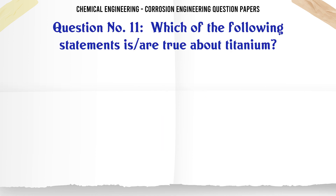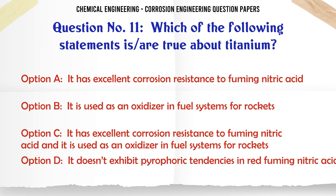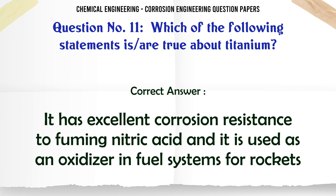Which of the following statements is/are true about titanium? A. It has excellent corrosion resistance to fuming nitric acid. B. It is used as an oxidizer in fuel systems for rockets. C. It has excellent corrosion resistance to fuming nitric acid and it is used as an oxidizer in fuel systems for rockets. D. It doesn't exhibit pyrophoric tendencies in red fuming nitric acid. The correct answer is C.